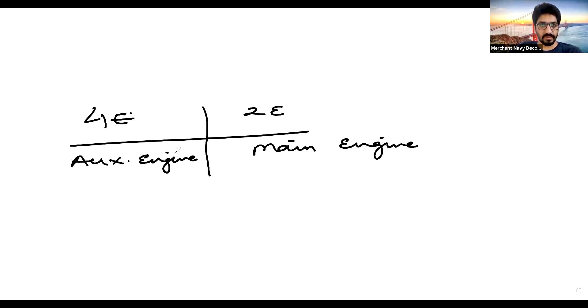So if we compare between the four stroke engine and two stroke engine, basically our main engine on ship is two stroke and auxiliary engine is four stroke. In old days, earlier days, the auxiliary engine that is for power generation, basically generator engine.